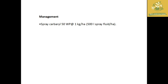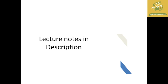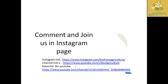Management of root aphids involves spraying Carbaryl 50 WP at 1 kg per hectare with 500 litres of spray fluid per hectare. Lecture notes are provided in the description, and the sorghum crop video link is also placed for reference. Please comment on the video and join us on the Instagram page. If you like the video, like it, share it with your friends, subscribe to BAC Agriculture, and hit the bell icon to get regular updates. Thanks for watching.